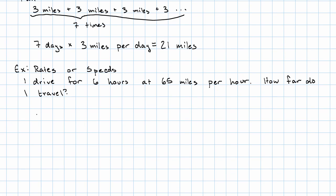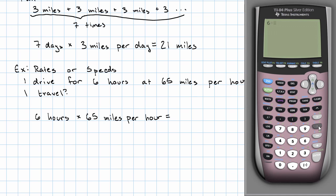Well, that's 6 hours times 65 miles per hour. You know what? I'm going to ask a calculator what 6 times 65 is. 6 times 65 is 390. So that's 390 miles.